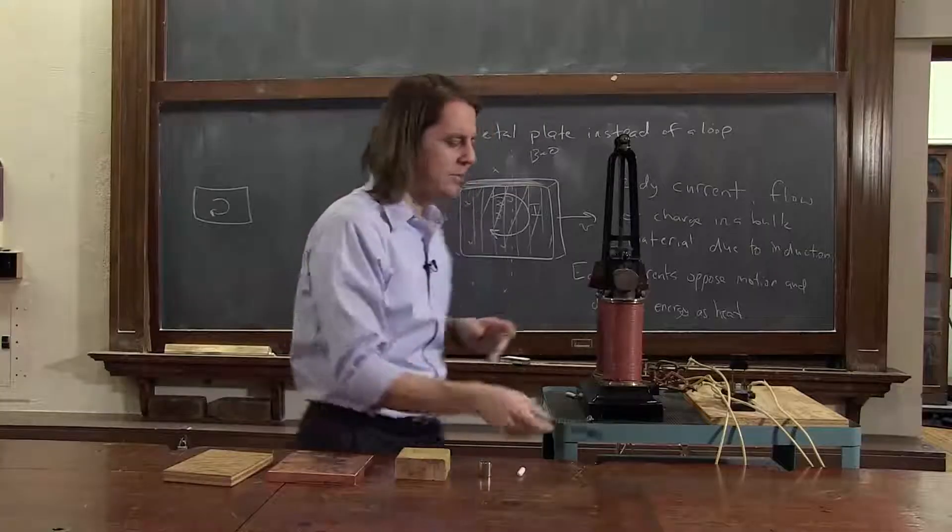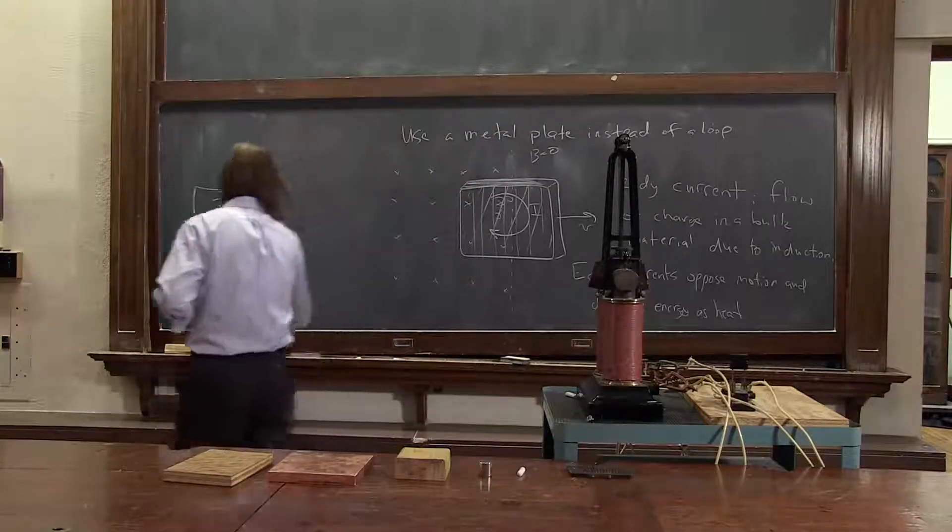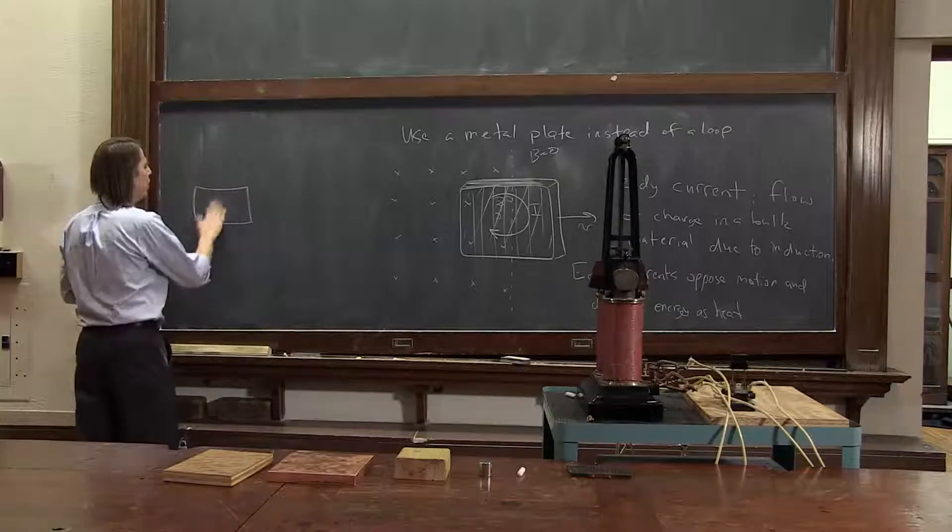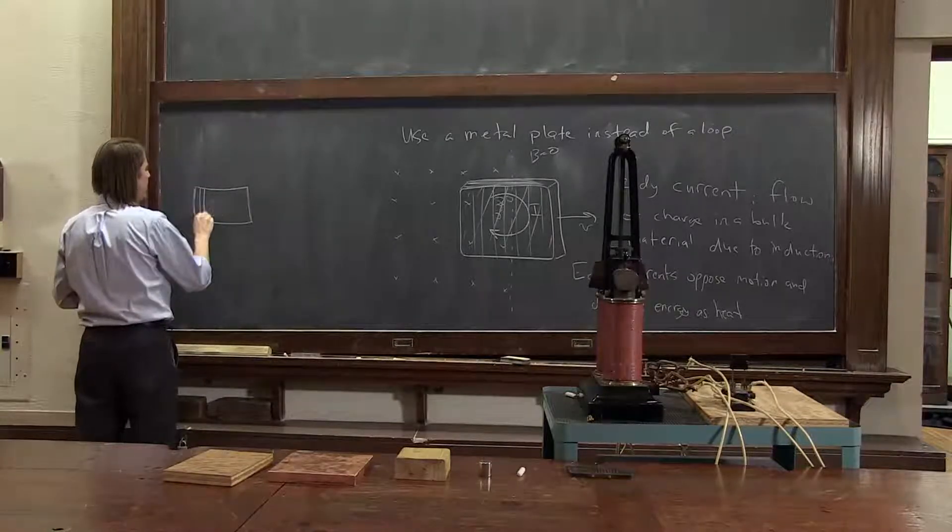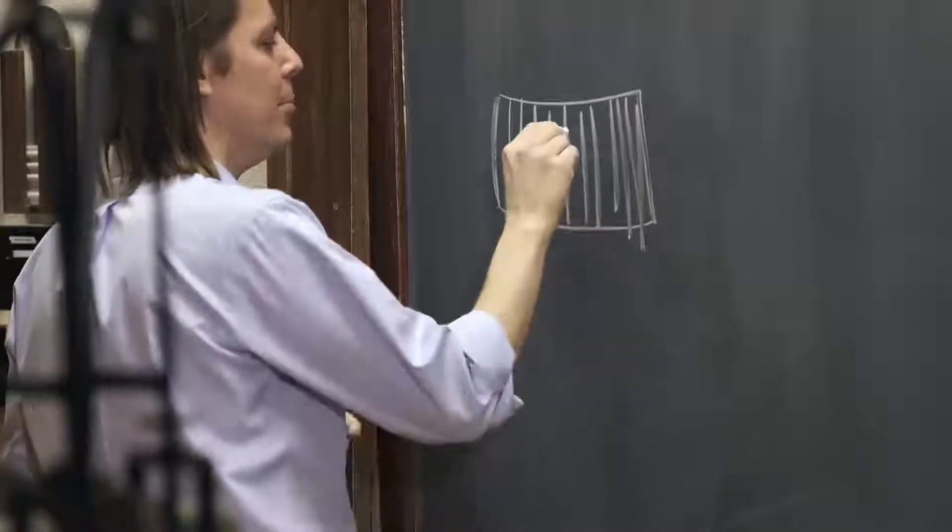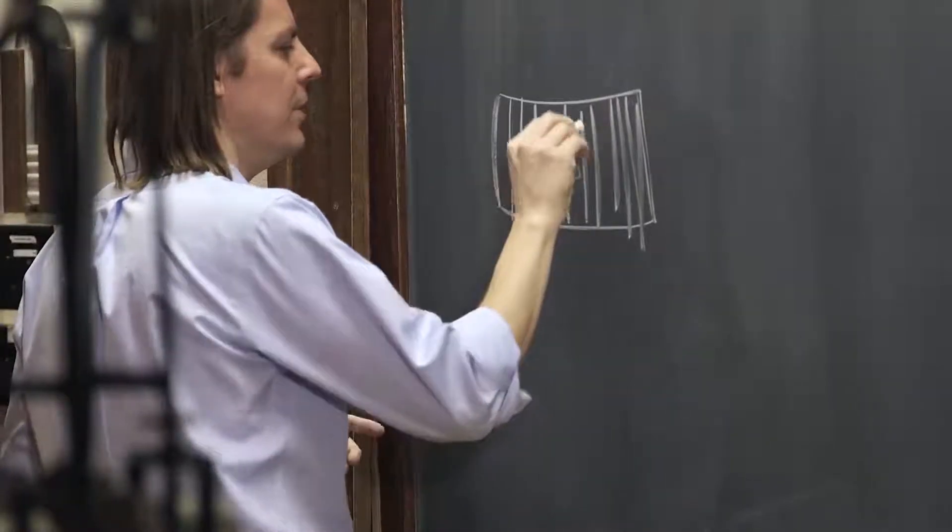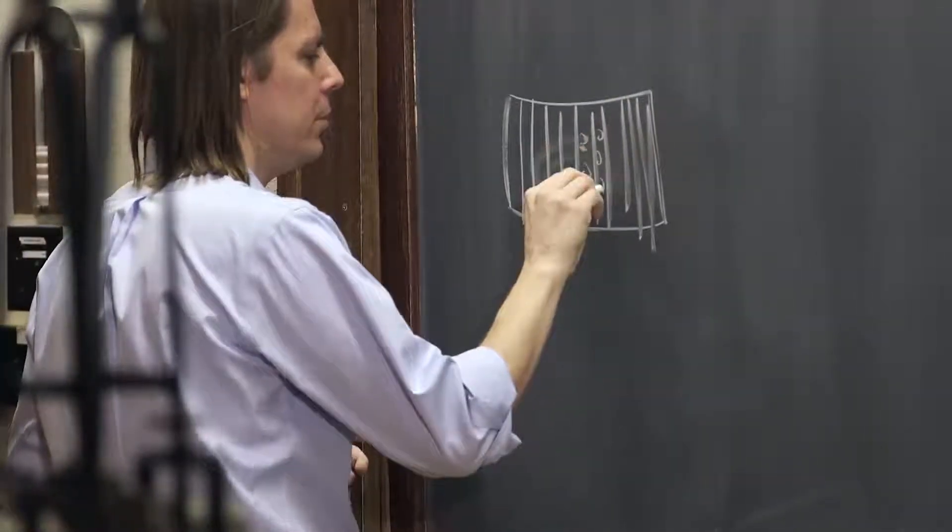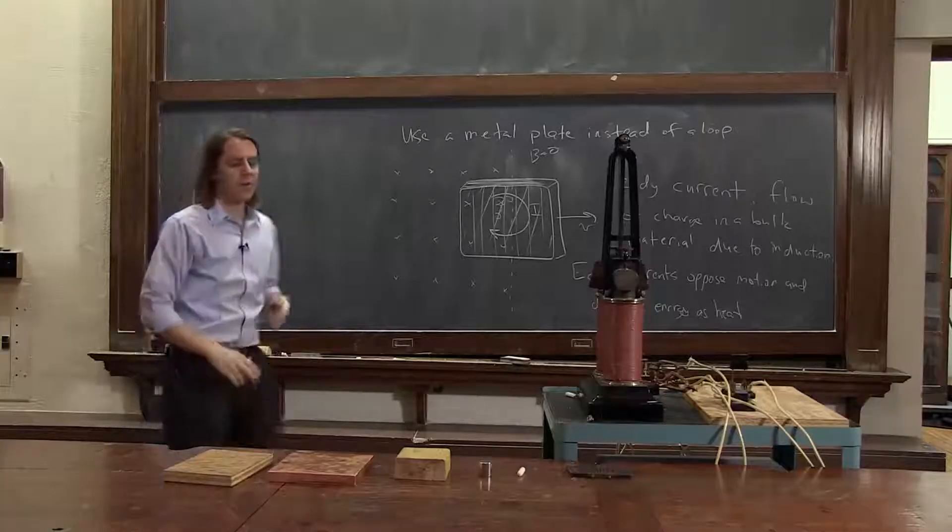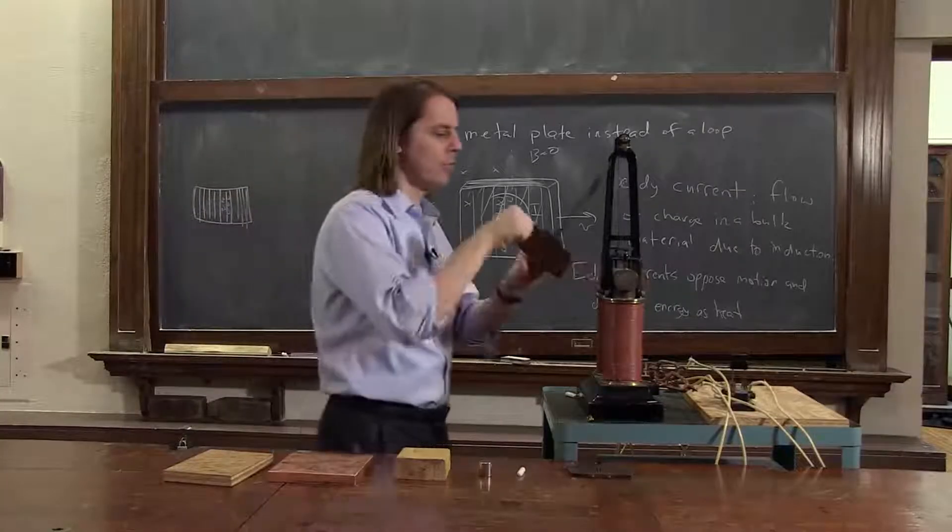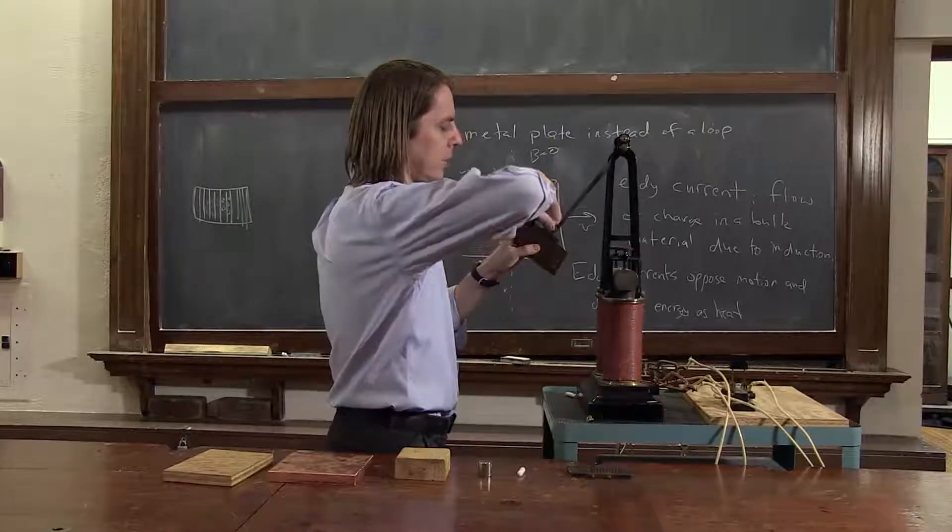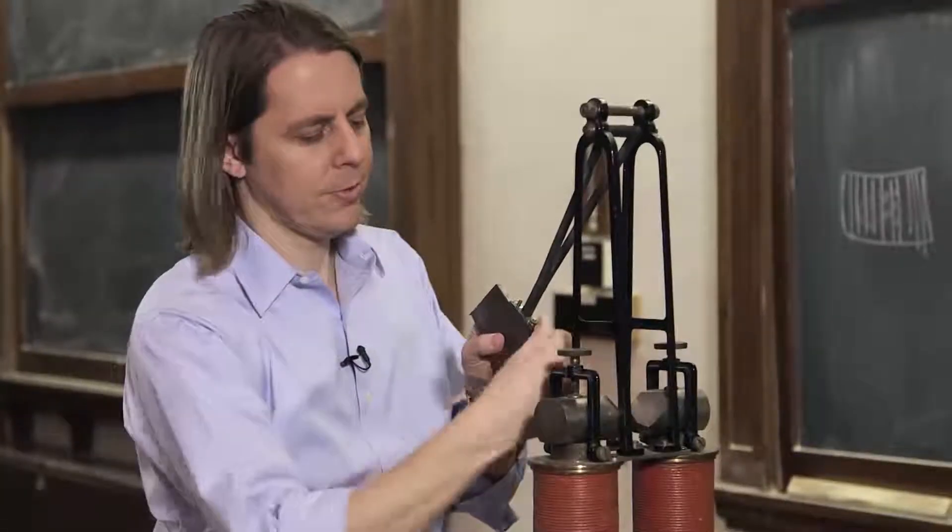So because it's slotted, the eddy currents can't flow over such a large area. You get much smaller eddy currents in these little areas, and they'll create a much smaller force. So let me just change it out real quick for the other one.